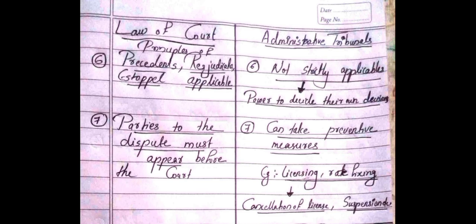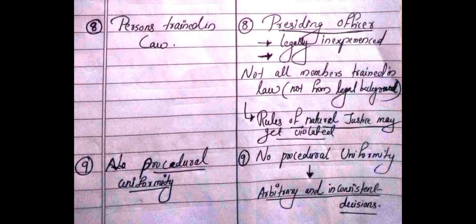A Court of Law has persons trained in law, whereas in an Administrative Tribunal the presiding officer may be legally inexperienced — not all members are from a legal background. Because of this, rules of natural justice may get violated. In a Court of Law there is procedural uniformity, whereas in Administrative Tribunals there is no procedural uniformity, which leads to arbitrary and inconsistent decisions.